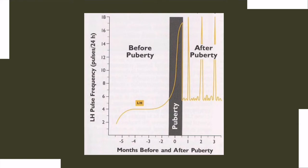This diagram shows the luteinizing hormone frequency before and after puberty. Frequency of LH pulses as a reflection of GnRH pulses in heifers prior to the onset of puberty, showing the substantial time required — approximately two months — for pulse frequency to become high enough for puberty to be achieved. The variation in LH pulse frequency after puberty reflects the changes occurring during the estrous cycle.